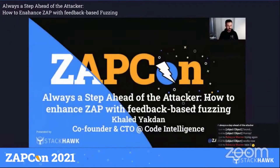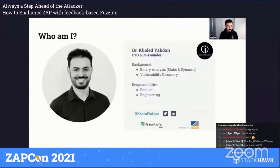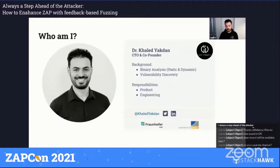Hi everybody, and welcome to the talk. I am really glad to be here today to talk to you about some of the work that we've been doing on feedback-based fuzzing and how we combine this with ZAP in order to have really effective testing of our applications. I am Khaled, one of the co-founders and the CTO of Code Intelligence, a startup from Bonn in Germany mainly working on fuzzing and our product CI Fuzz, in order to enable developers to seamlessly integrate fuzzing into their development process.